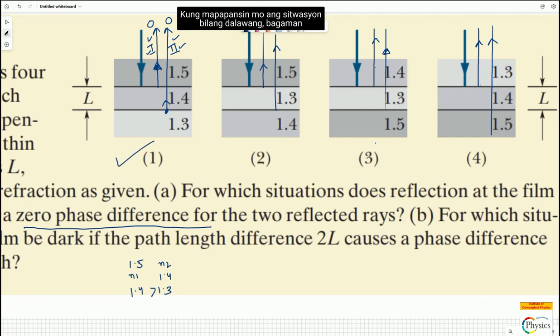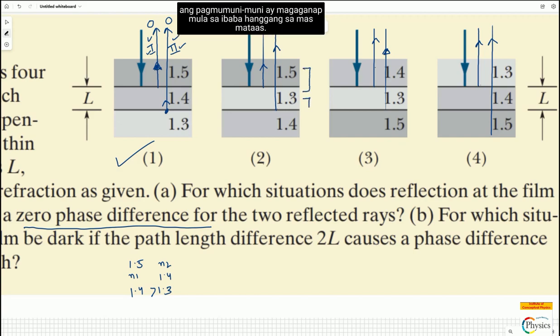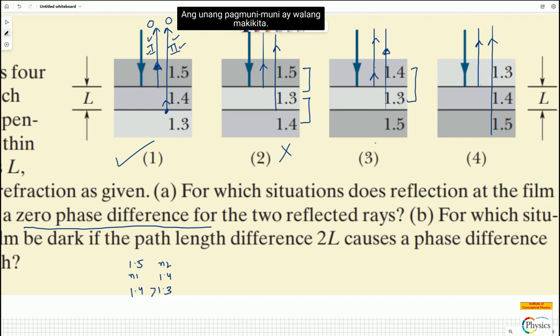If you notice situation number two, although this is higher to lower, but the second reflection will happen from lower to higher. So this is wrong. In the first one, higher to lower makes sense. The first reflection will see nothing. But the second reflection which is happening is from lower to higher because 1.3 is less than 1.5.